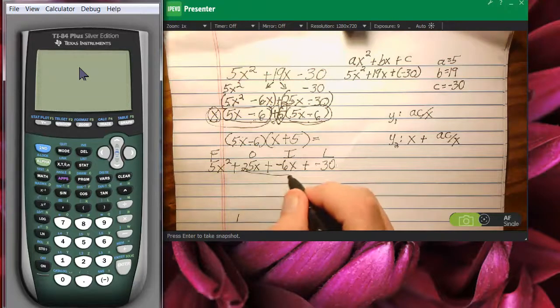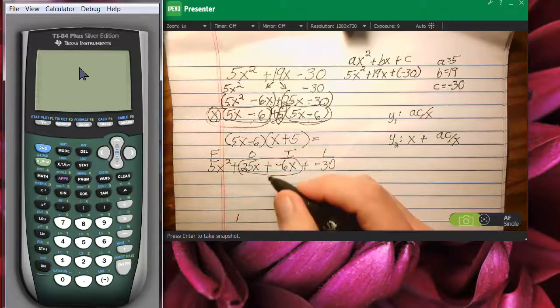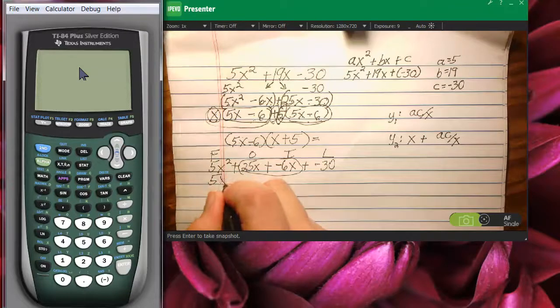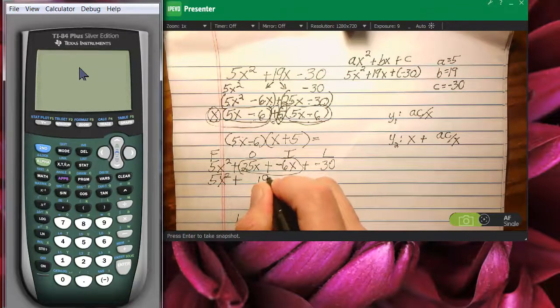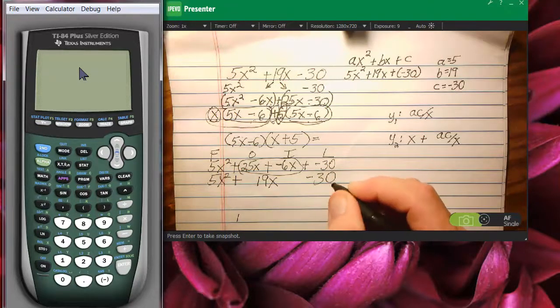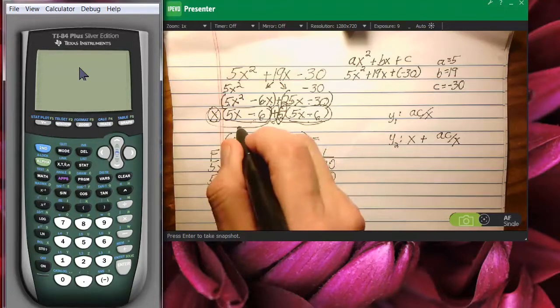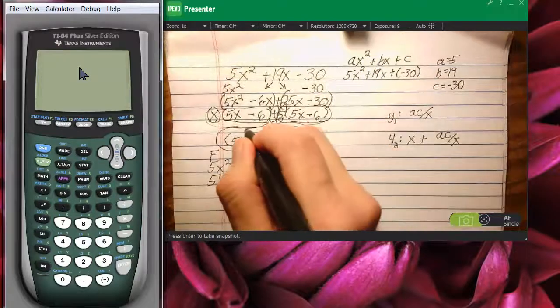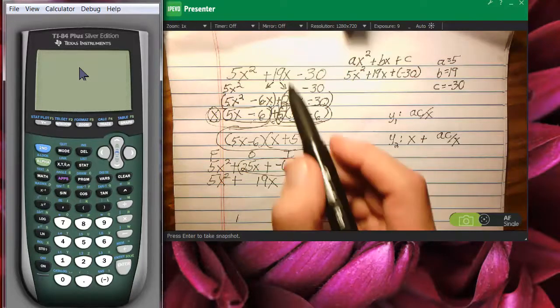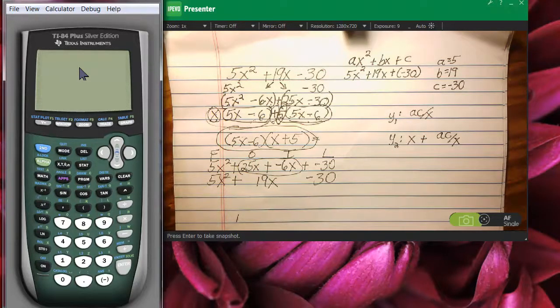Now, 25x minus 6x is 19x. So my answer is 5x squared plus 19x minus 30. And this is exactly what I started with. So that means that this factorization is correct. And my answer will be, parentheses 5x minus 6, parentheses closed, parentheses opened, x plus 5, parentheses closed. This is the factorization of this.